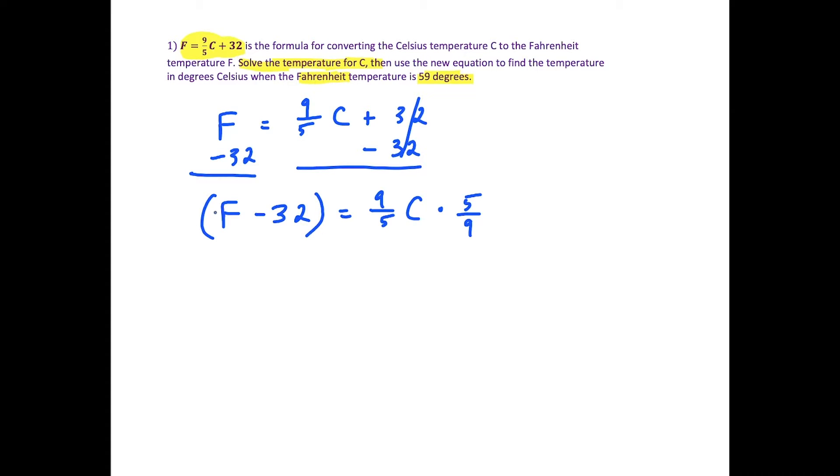On the left side, write this in parentheses because the 5/9 is attached to both F and the minus 32. There was no specification on what form our answer had to be in, so we can write C equals 5/9 times (F minus 32). This solves the first part where we had to solve for temperature C.